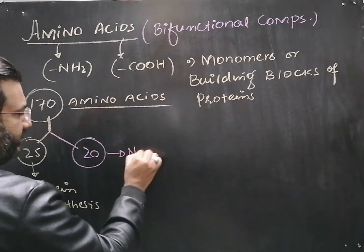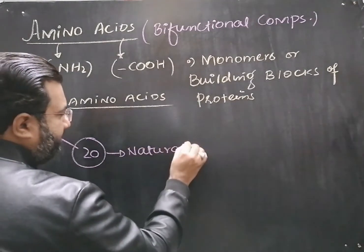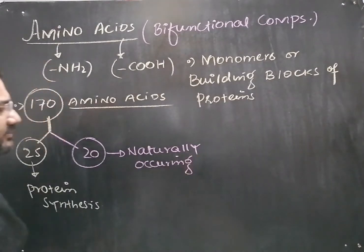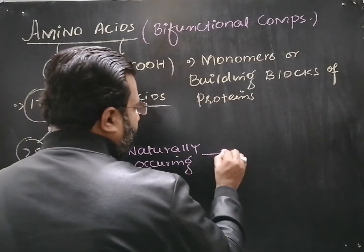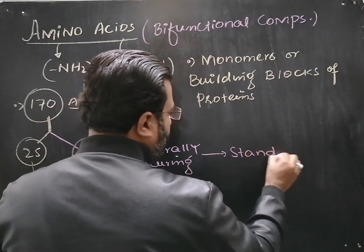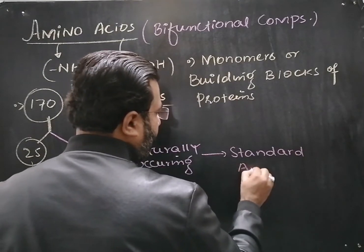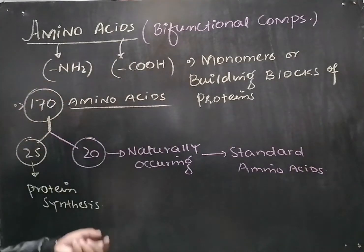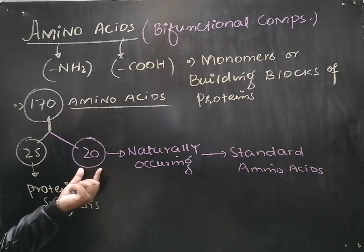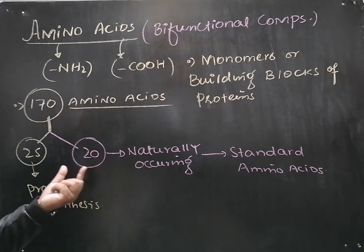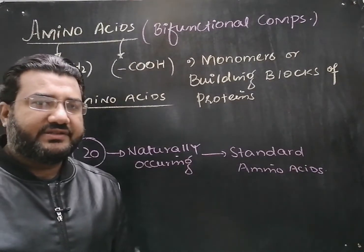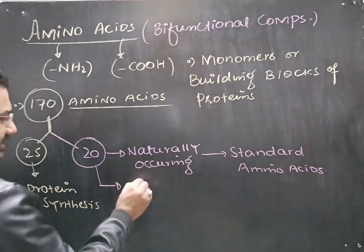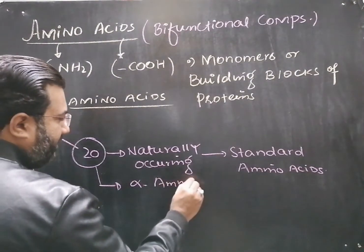These 20 naturally occurring amino acids that are part of most proteins are called standard amino acids. In books, when we study the topic of amino acids, our main focus is on these 20 naturally occurring standard amino acids.